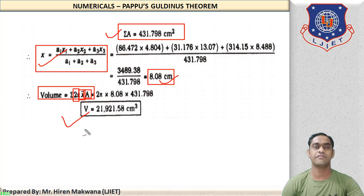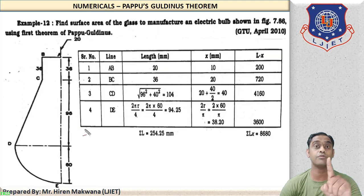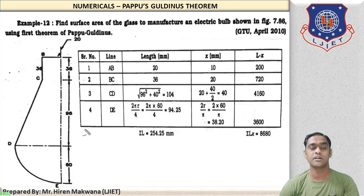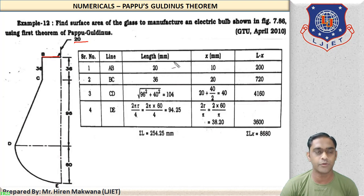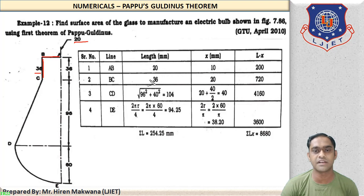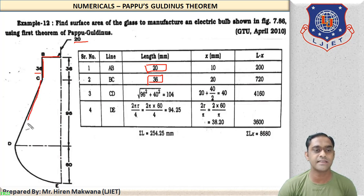Now let us see the next numerical in which we have to find area — so the given figure is a 2D length element. Length AB = 20 mm, length BC = 36 mm.